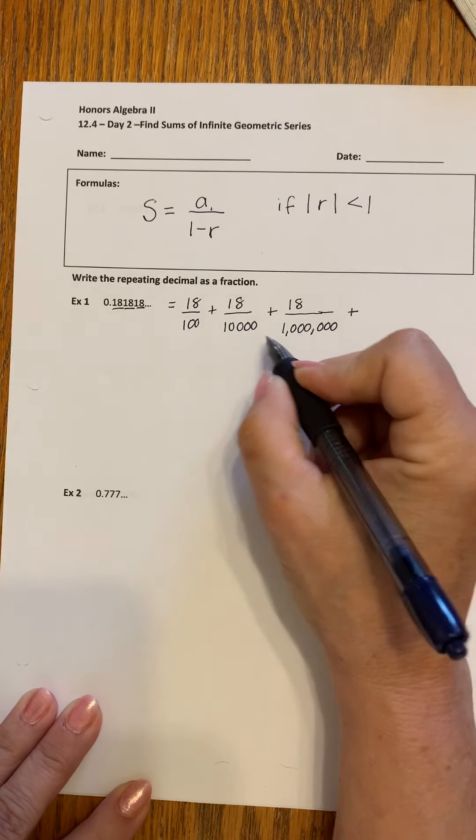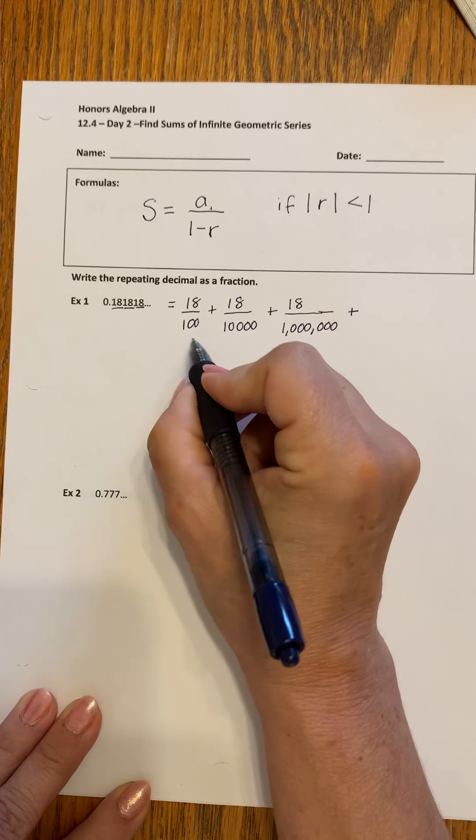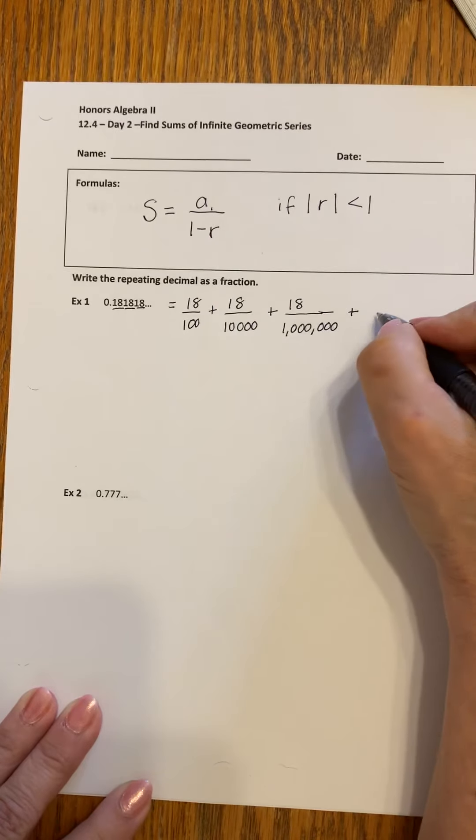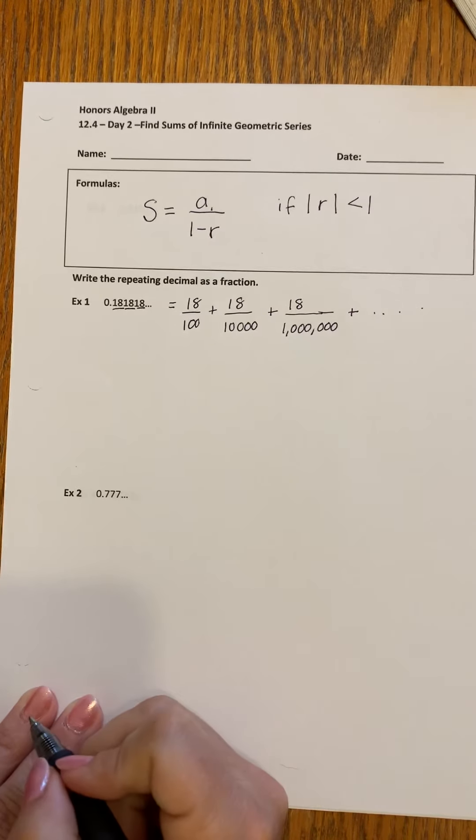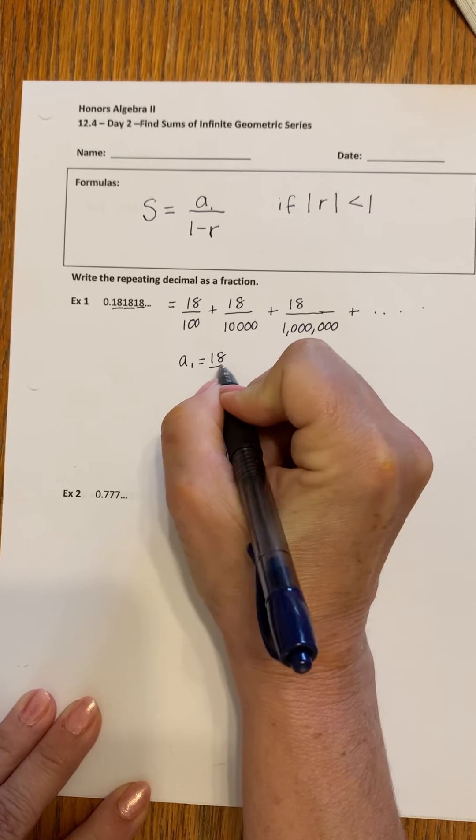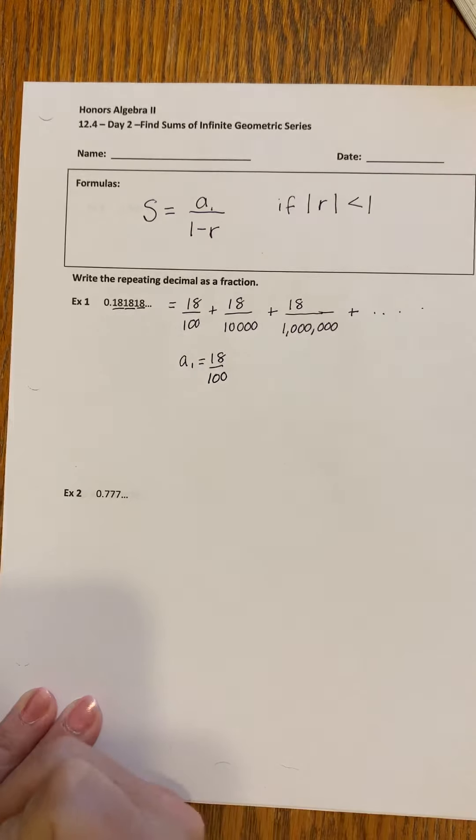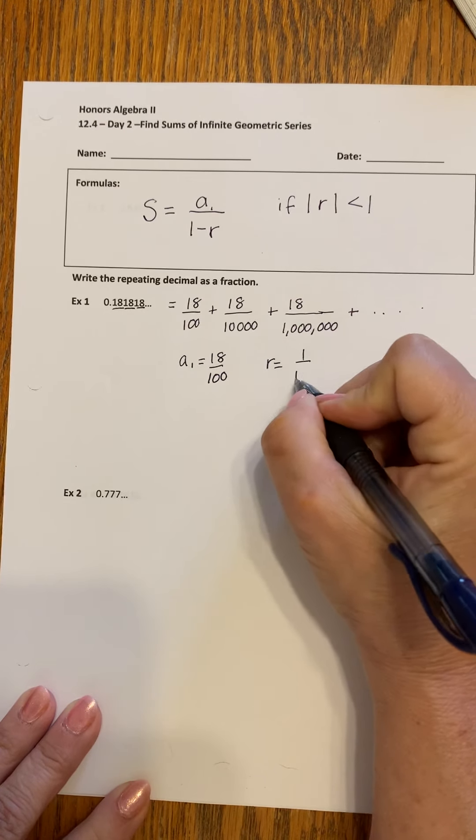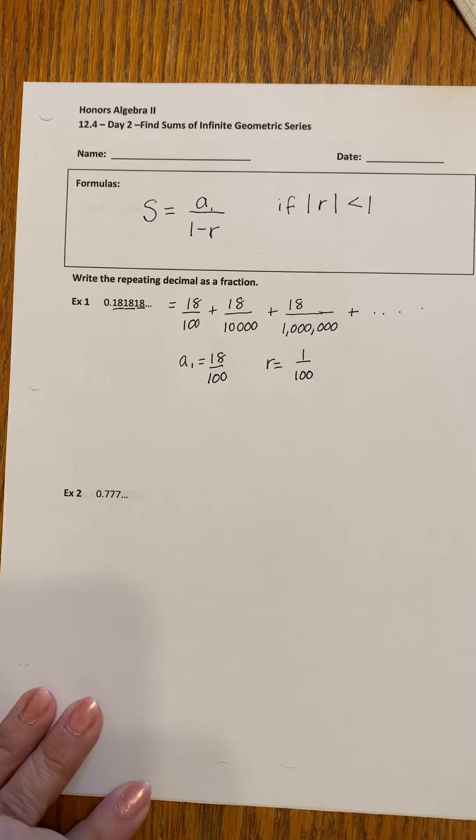We would put another 1 and you can see that what we're doing is we're adding two zeros every time. And this goes on forever. How do we write this as a fraction? Well, we know that the first term is 18 over 100. And we know that the common ratio is 1 over 100. Two zeros each time. We're multiplying that.